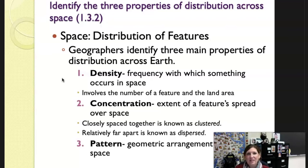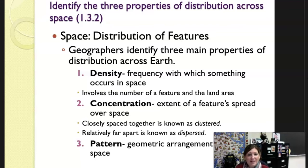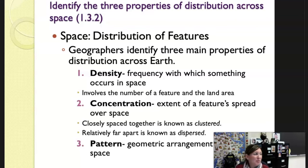The second term is concentration — the extent of a feature's spread over space. Closely spaced together is known as clustered; relatively far apart is known as dispersed. With the desk example, the desks were at one time clustered together so I could fit 30 in my room, but now they are spread far apart — more dispersed.